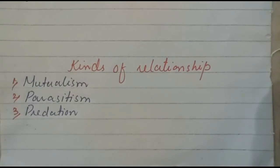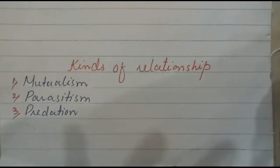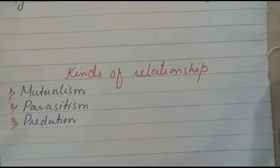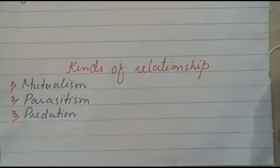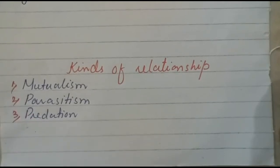Living organisms are interdependent for food and shelter for their survival. They cooperate and compete with each other for food and shelter. There are various types of interactions in living organisms, such as mutualism, parasitism, and predation.